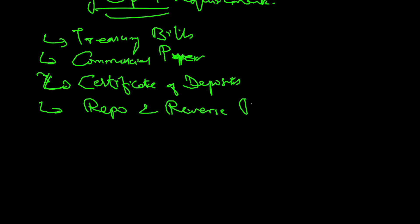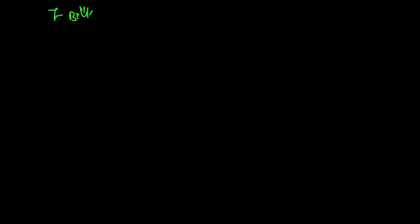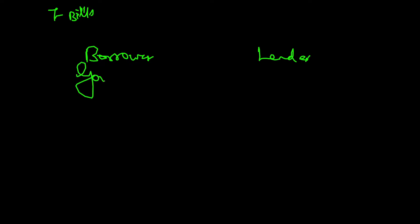Number four, repo and reverse repo. So all these we will be seeing now. Starting with T-bills: there is a borrower and there is a lender. The borrower here is the government — the government is borrowing.